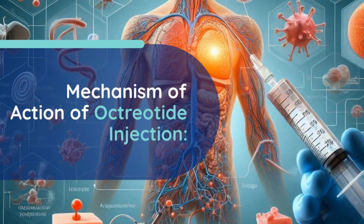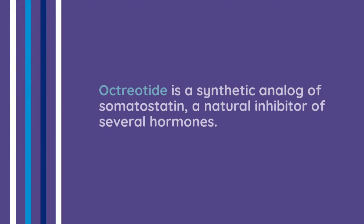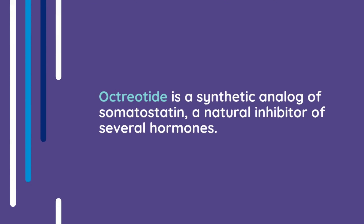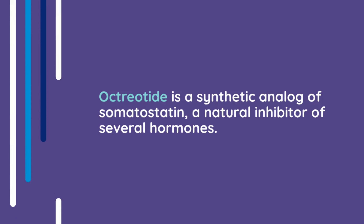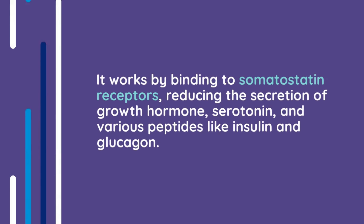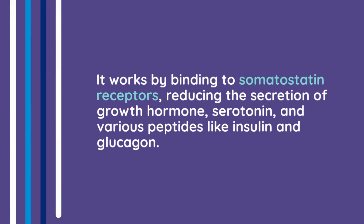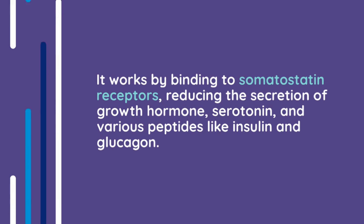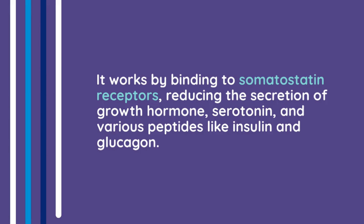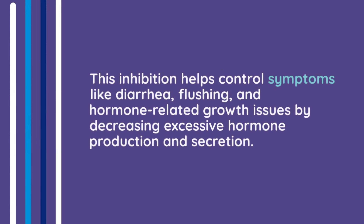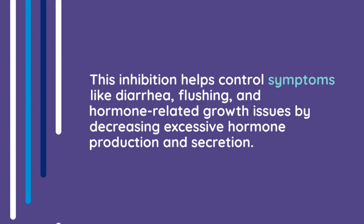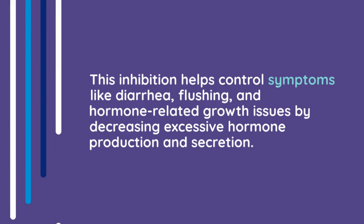Mechanism of action of octreotide injection. Octreotide is a synthetic analog of somatostatin, a natural inhibitor of several hormones. It works by binding to somatostatin receptors, reducing the secretion of growth hormone, serotonin, and various peptides like insulin and glucagon. This inhibition helps control symptoms like diarrhea, flushing, and hormone-related growth issues by decreasing excessive hormone production and secretion.